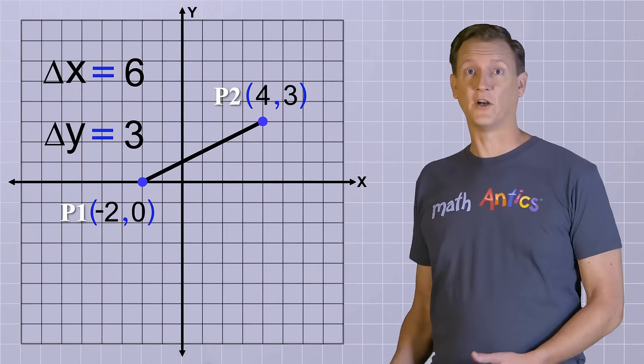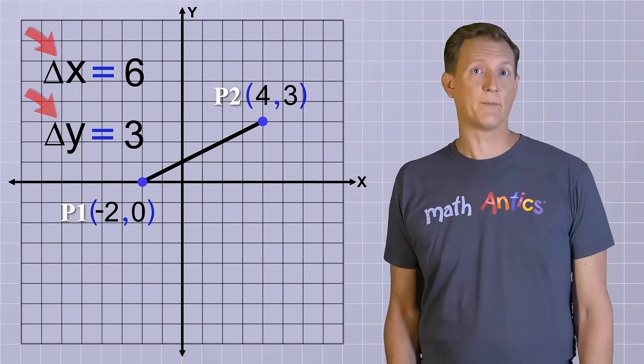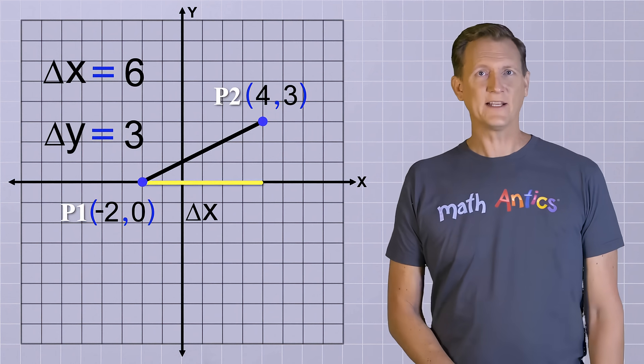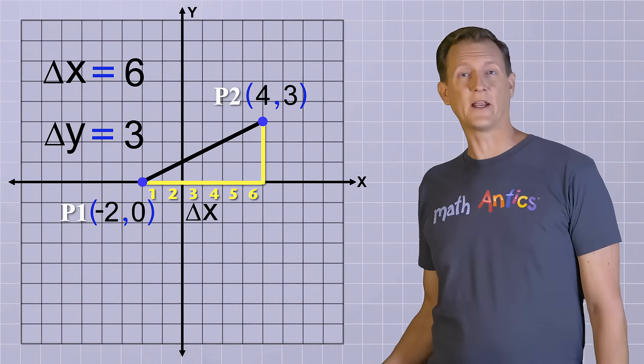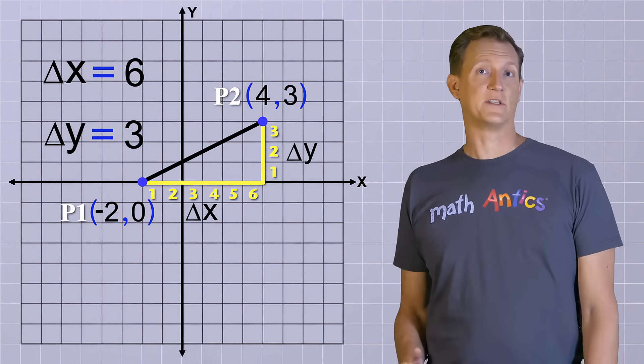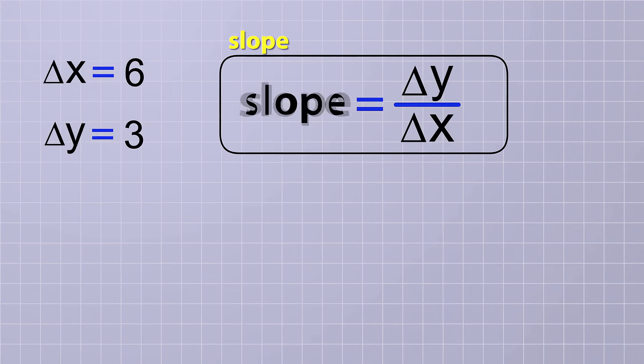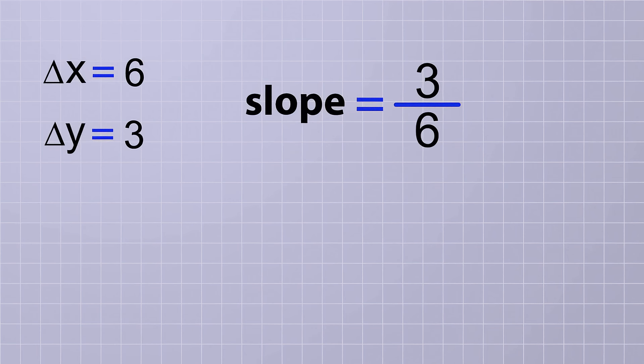Great, now we have our delta x and delta y values, and you can confirm that we got them correct by looking at our graph. The length of the delta x side is 6 units and the length of the delta y side is 3 units. Now let's plug those delta values into the equations for slope and distance. Slope equals delta y over delta x. We just found that delta y equals 3 and delta x equals 6. So our slope equals 3 over 6, which simplifies to 1 half or 0.5. That was easy.